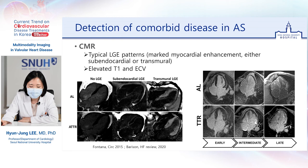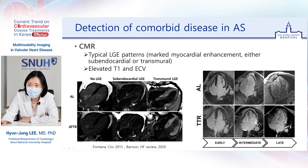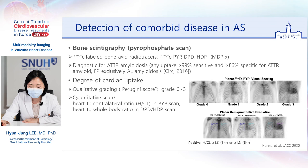On CMR, cardiomyopathy is associated with typical LGE patterns of marked myocardial enhancement, either subendocardial or transmural. Of course, there is a wide variety, and some patients — especially with early amyloidosis — may not show LGE. T1 and ECV values are also prominently elevated in patients with amyloidosis. Here are some examples of LGE patterns in amyloidosis. You can see patients with no LGE, patients with subendocardial LGE, and also patients with transmural LGE throughout the whole myocardium, including whole transmural LGE uptake.